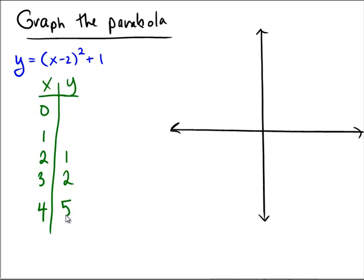Now let's go back and take the number 1. 1 minus 2 is -1, -1 squared is positive 1, and 1 plus 1 is 2. 0 minus 2 is -2, -2 squared is 4, and 4 plus 1 is 5.